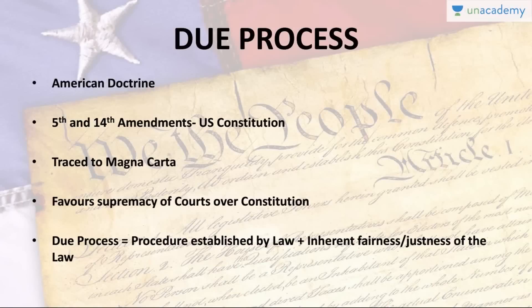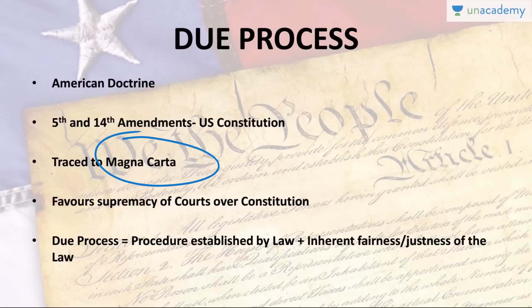When we talk about the due process clause which impressed our constitution makers, it is basically taken from the American doctrine. The original text of the American constitution did not have a due process clause, but the Fifth and Fourteenth Amendments provided that the government may not deprive any person of life, liberty, or property without due process of law. In the nineteenth century, the American Supreme Court traced the doctrine to the Magna Carta.